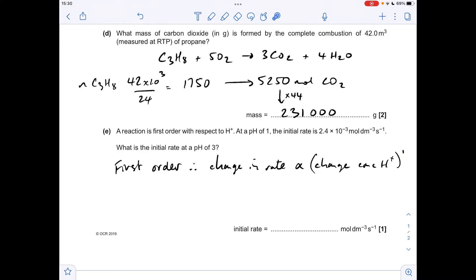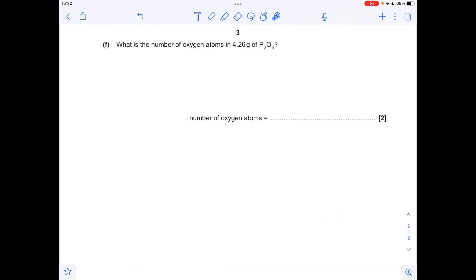So we know the initial rate for pH 1 and we want to calculate the initial rate for pH 3. So a difference of two in pH is a 100 times decrease in the concentration of the H+ ion. Basically, a change of pH of one is a 10 times change in H+ concentration. So to get the new rate, all we need to do is multiply the initial rate at pH 1 by one over 100, which gives an initial rate of 2.4 times 10 to the minus 5.